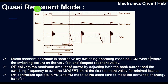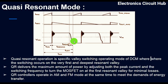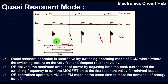Quasi resonant operation is a specific valley switching operating mode of DCM where the switching occurs on the very first and deepest resonant valley. The next cycle switching off occurs at the very first and deepest valley. Since it is the deepest valley, the drain-to-source voltage is at its lowest point there.